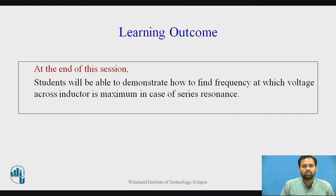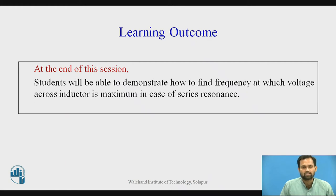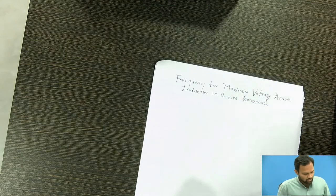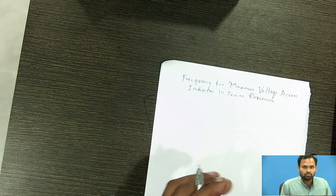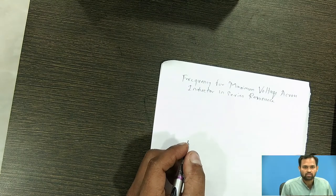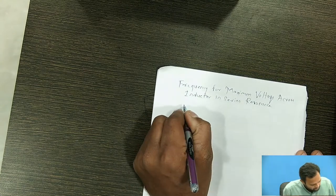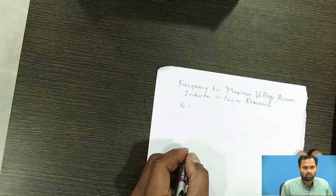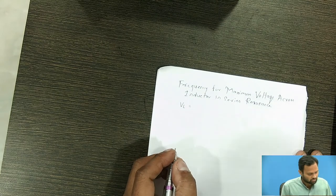Before starting with the derivation, you should recall equations for voltages, equation for current, equations for impedance, magnitude of impedance, and the variation of frequency with respect to impedances — that is, what is the effect of variation of frequency on impedances. Now we will start with the derivation for frequency of maximum voltage across inductor. We have to write down the equation for voltage across inductor, VL.